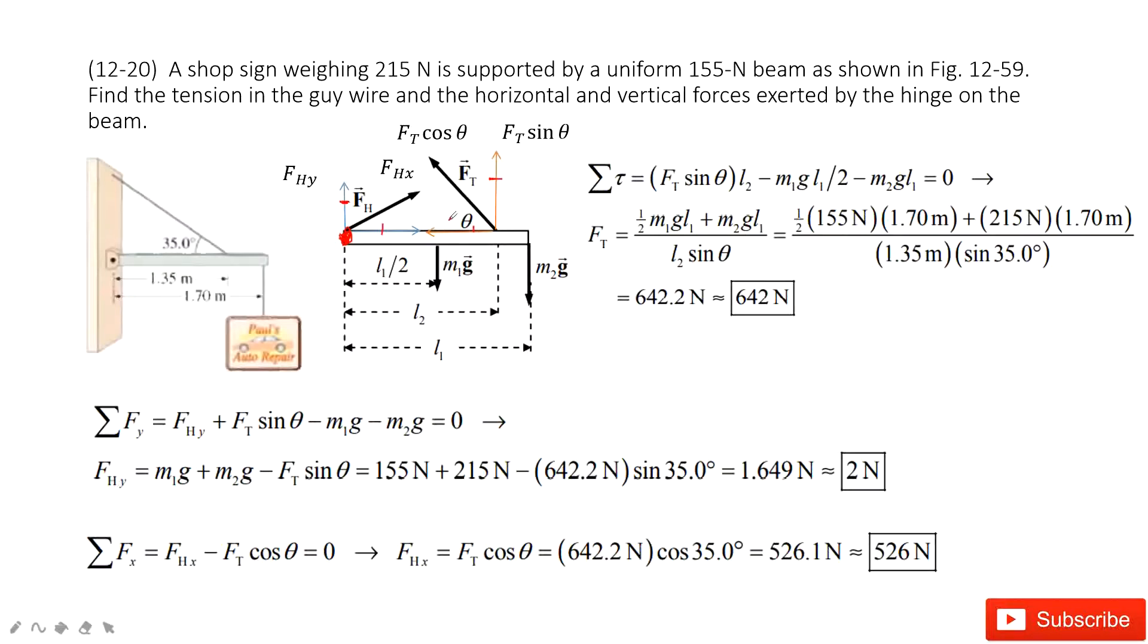And then we can get the force for the x-component. At the x-component, we only have two forces. So Fhx minus Ft cos θ equals zero. From this equation, you can get Fhx. Now you have both components of Fh. Thank you.